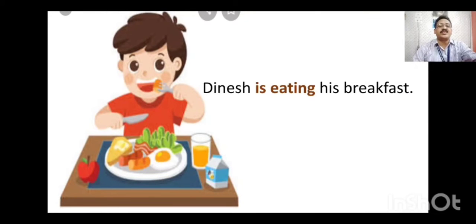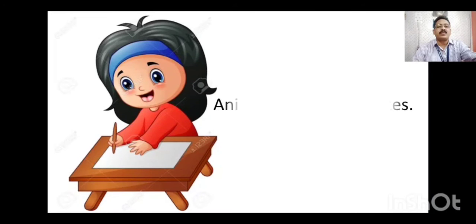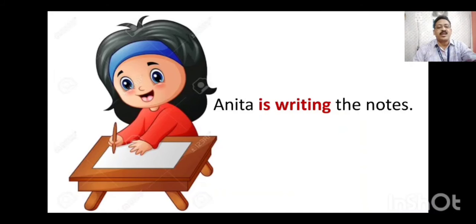Next: 'Dinesh is eating his breakfast.' Dinesh is a singular boy. 'Is' is used when the subject is singular; when we add -ing to the verb 'eat,' it becomes present continuous tense — 'Dinesh is eating his breakfast.' Next: 'Anitta is writing the notes.' Anitta is also a singular girl, so 'is' is added. 'Writing' is the present continuous form of the verb. So 'Anitta is writing the notes' is present continuous tense.